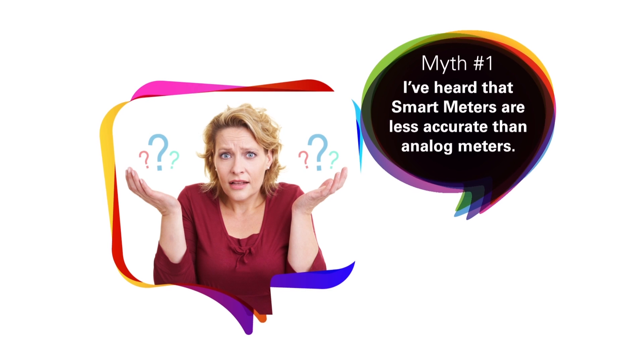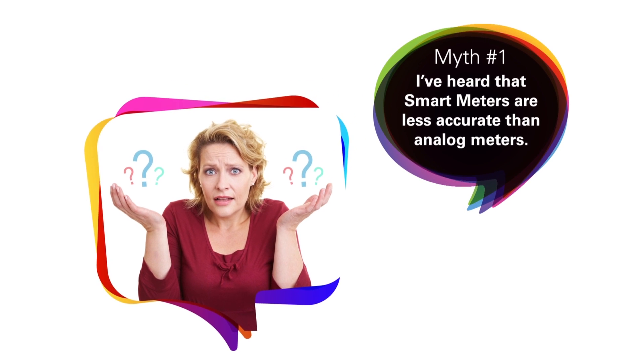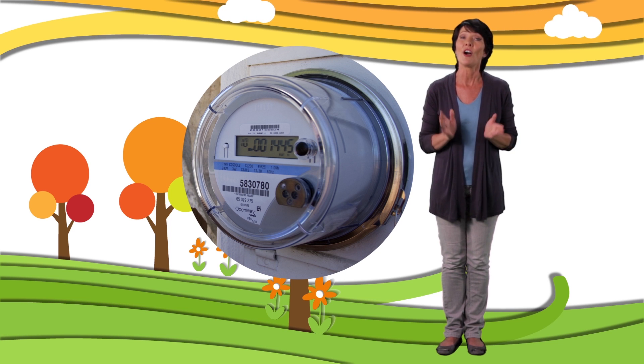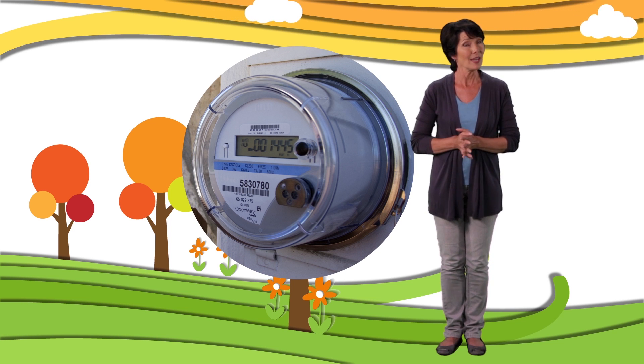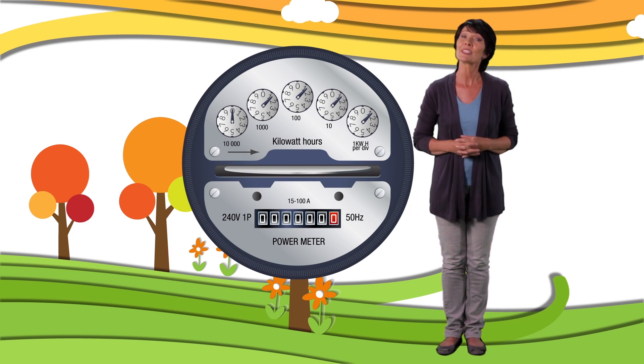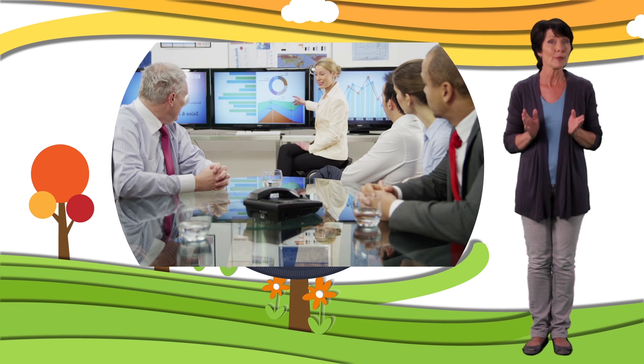Myth number one, smart meters are less accurate than analog meters. Fact, tests show that smart meters are as accurate and in some cases more accurate than analog meters, and it will stay that way because manufacturers are required to meet the performance standards set by the American Standards Institute.